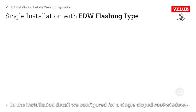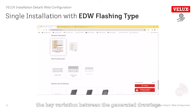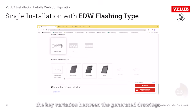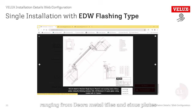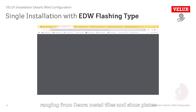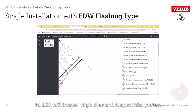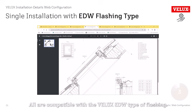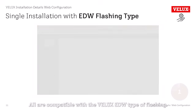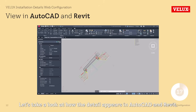In the installation detail configured for a single sloped roof window, the key variation between the generated drawings is the roof covering type, ranging from Decra metal tiles and sinus plates to 120mm high tiles and trapezoidal plates. All are compatible with the Velux EDW type of flashing.